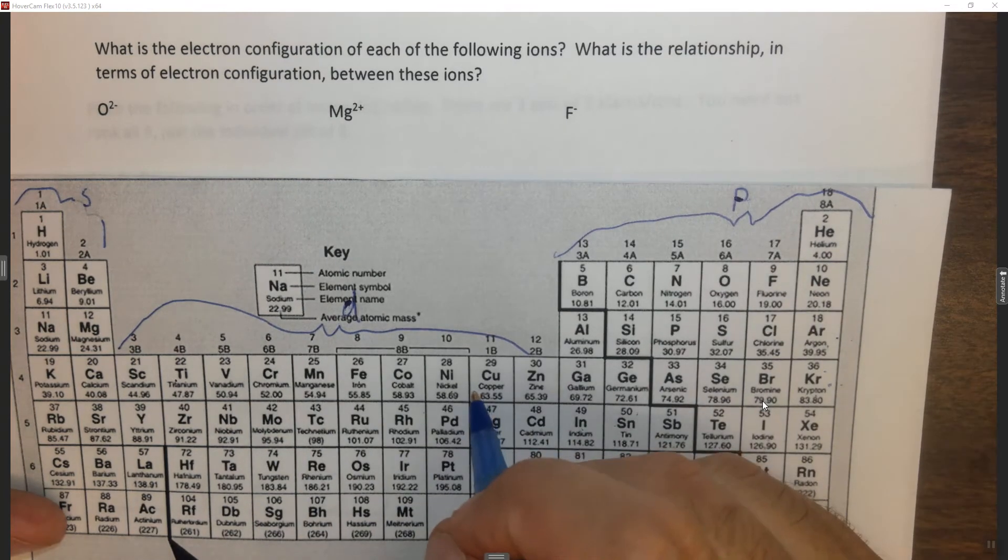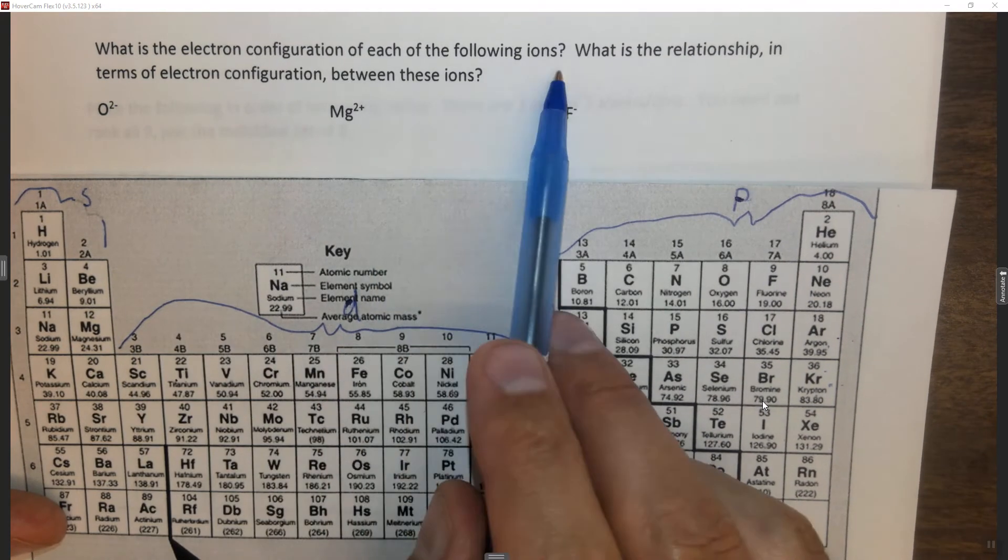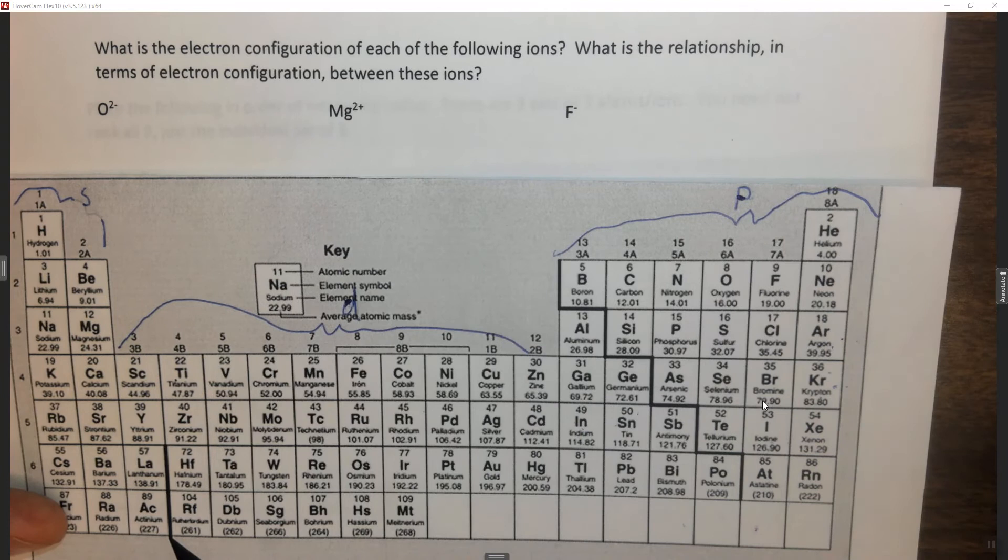So if you ever watched the previous two questions please do that before watching this one. It says what is the electron configuration of each of the following ions? What is the relationship in terms of electron configuration between these ions?